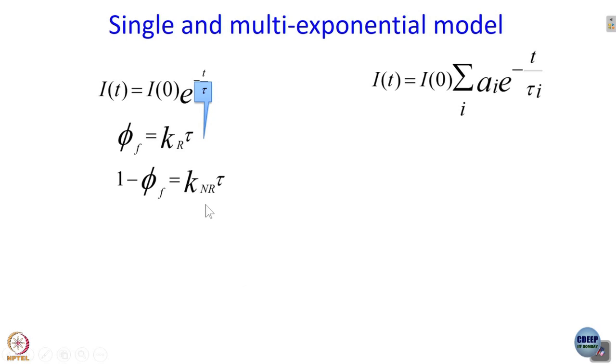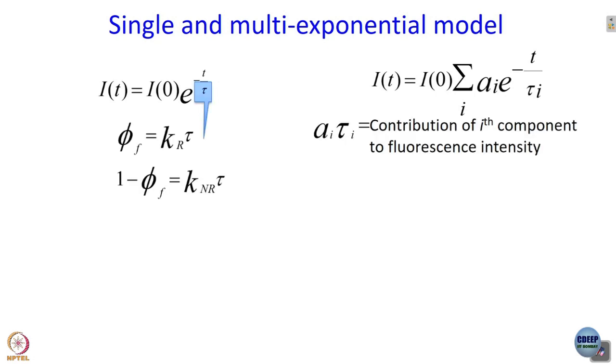The problem is we get the answer very nicely if it is a single exponential decay. The moment it is multiexponential, the situation becomes complicated. When it is multiexponential, what is the implication of a_i and tau_i? The answer is: a_i multiplied by tau_i gives the contribution of the i-th component to fluorescence intensity. This point needs to be understood very clearly to go further in the discussion of time-resolved fluorescence spectroscopy.